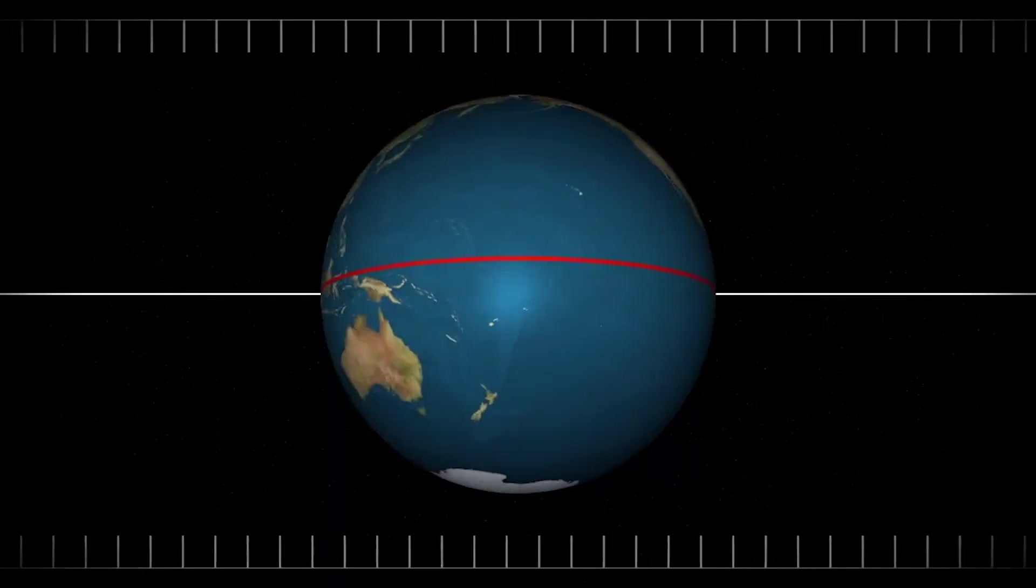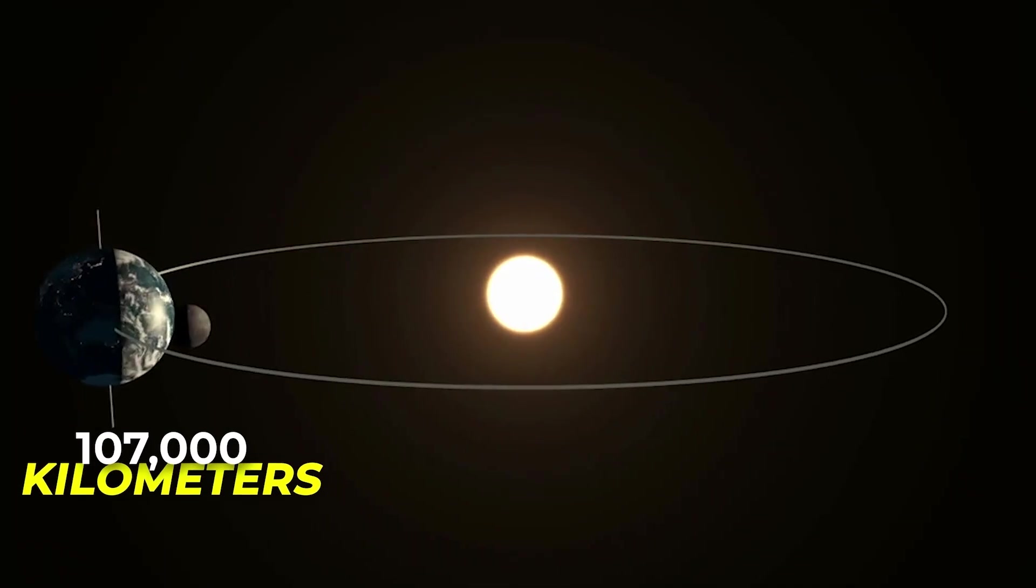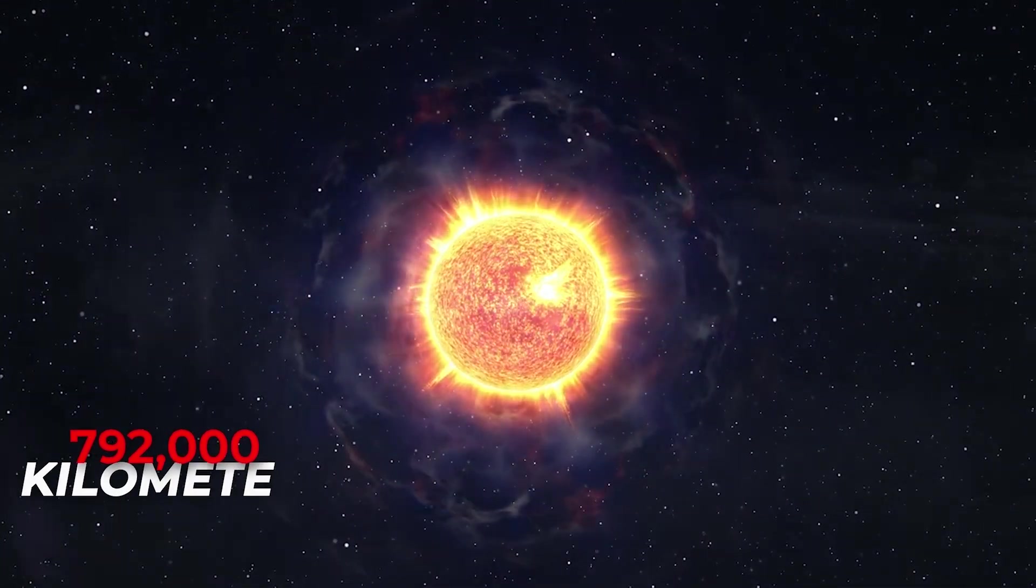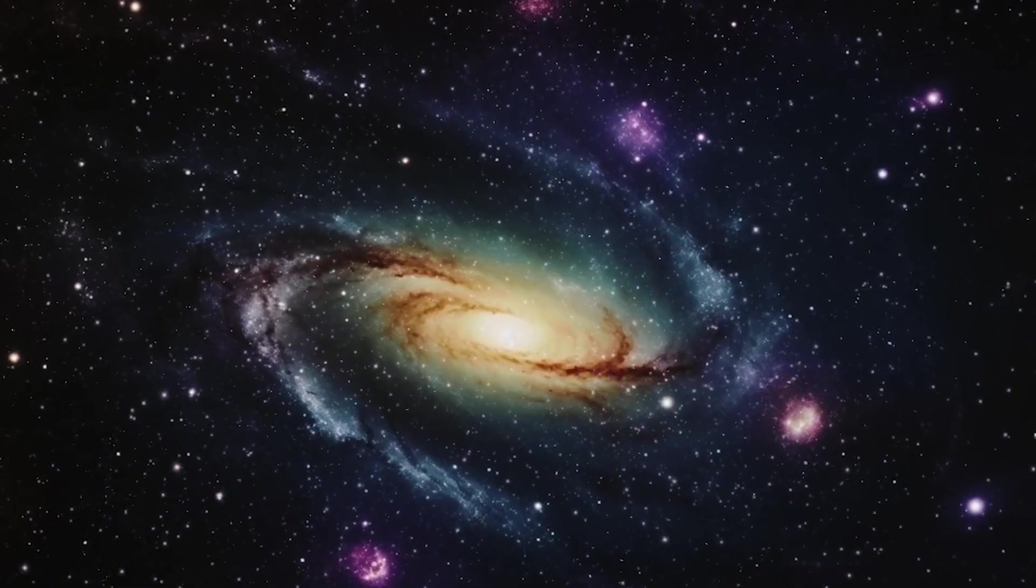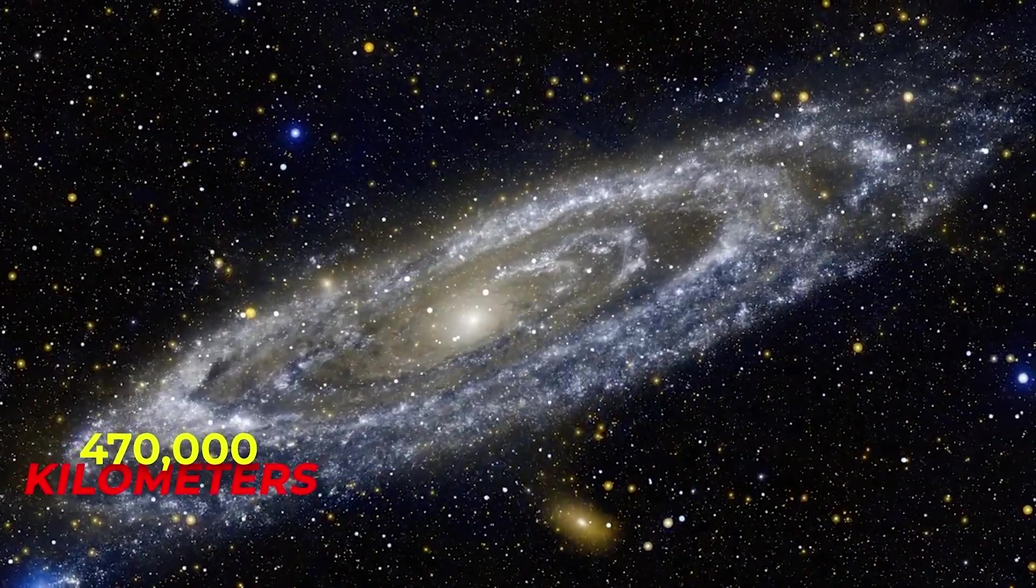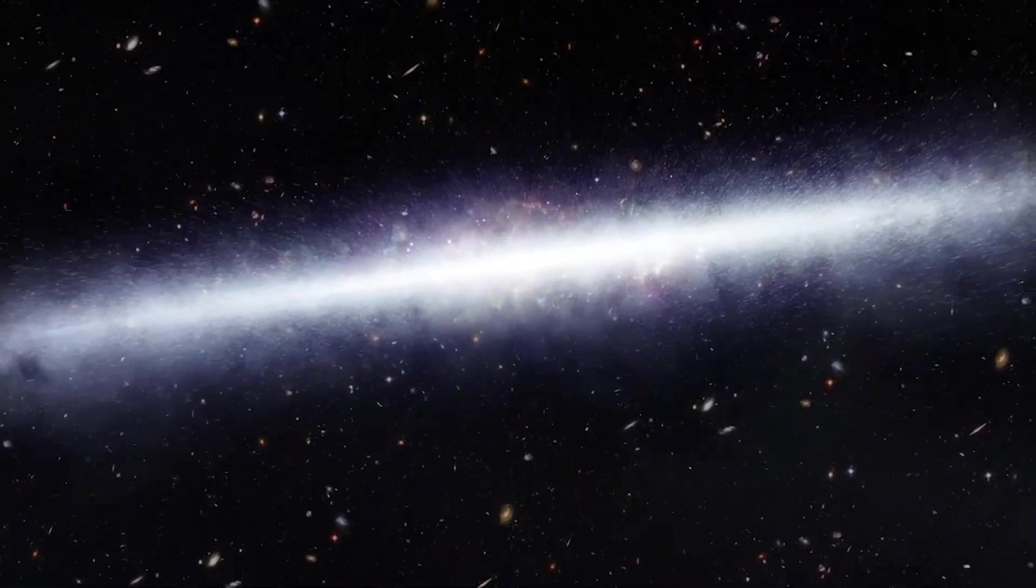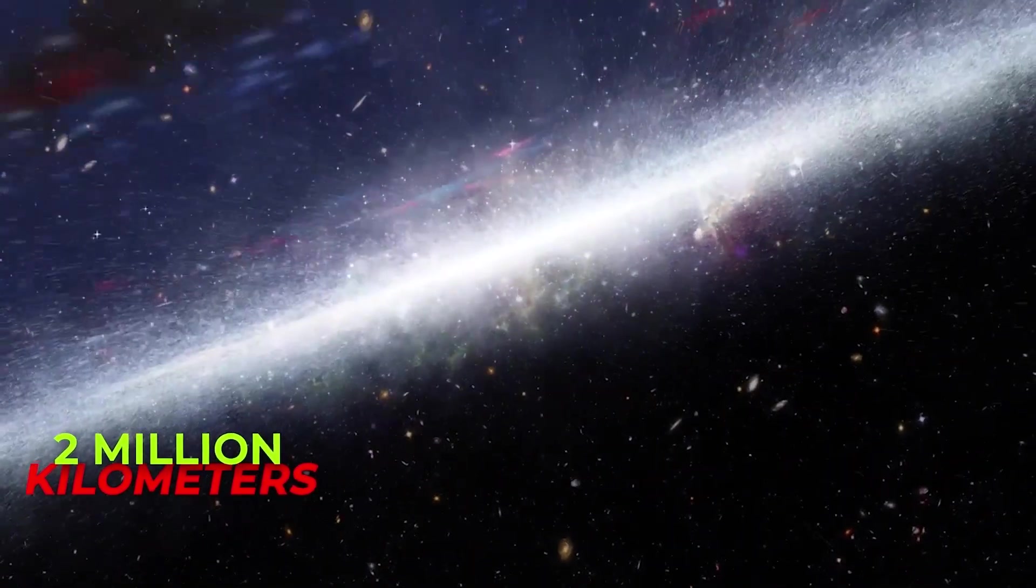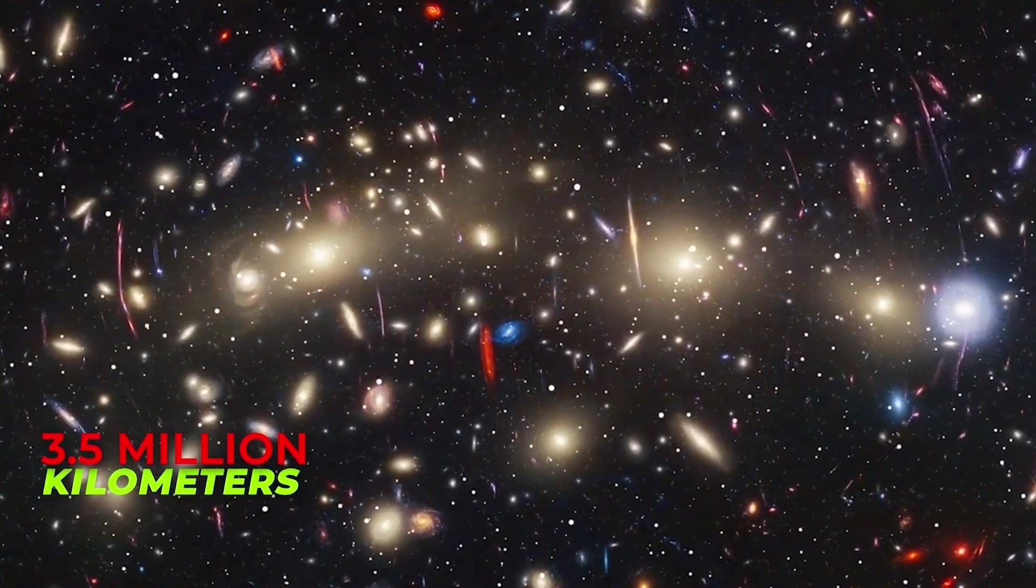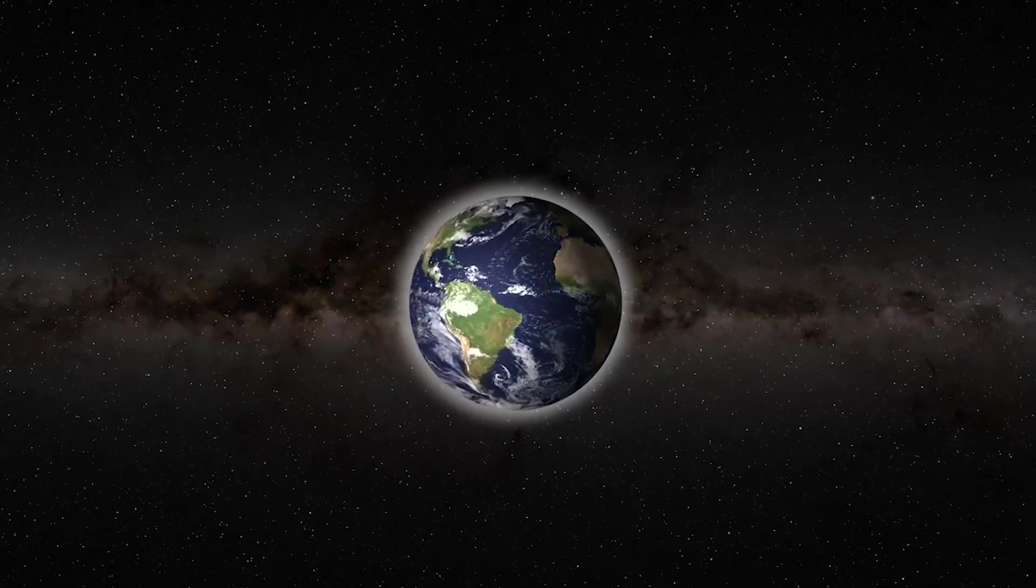The Earth spins at about 1,670 kilometers per hour at the equator. It orbits the Sun at 107,000 kilometers per hour. The Sun itself races through the Milky Way at 792,000 kilometers per hour, and our entire galaxy is plunging toward the Andromeda galaxy at nearly 470,000 kilometers per hour, while the Milky Way itself is being pulled toward the mysterious Great Attractor at nearly 2 million kilometers per hour. Add it all up, and you're hurtling through the cosmos at more than 3.5 million kilometers per hour right now. If the Earth suddenly stopped spinning, though, we'd all notice.